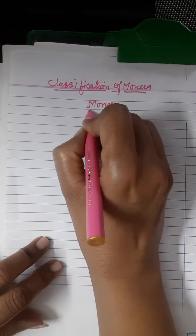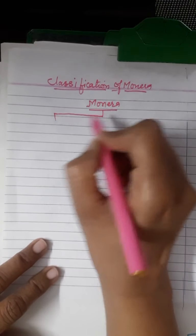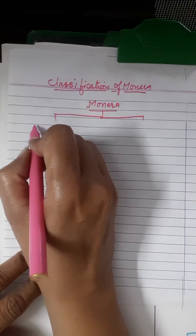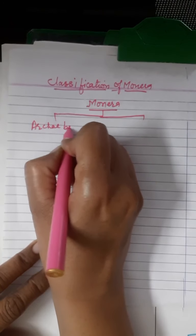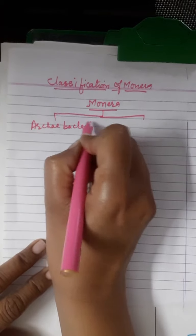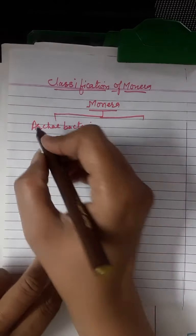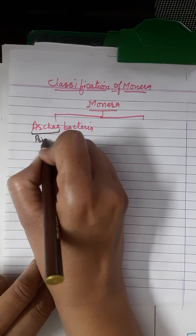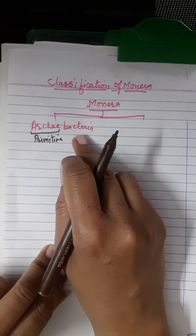All bacteria come under Monerans, but bacteria are of two types. The first type is called Archibacteria. Archibacteria are the most primitive or most ancient bacteria — 'Archi' meaning primitive, and 'bacteria' denoting bacteria.